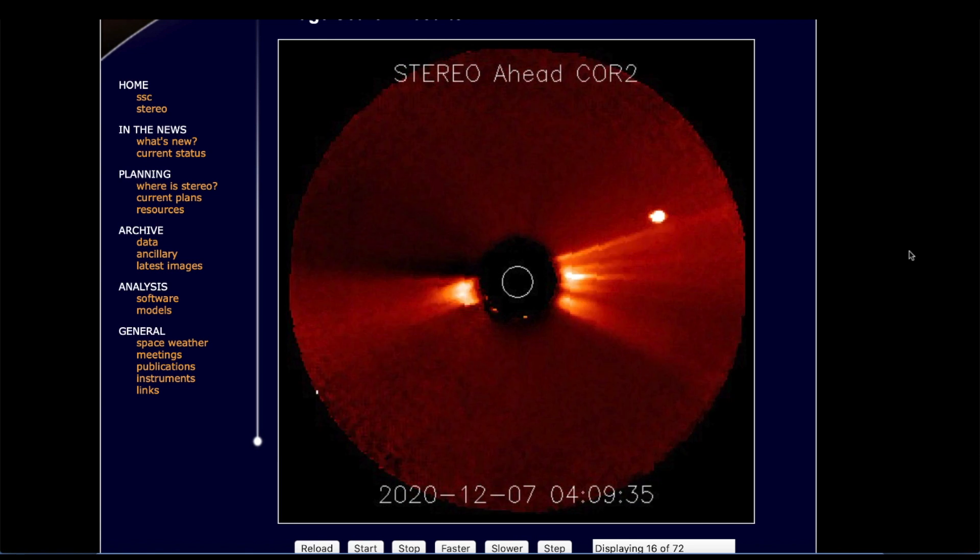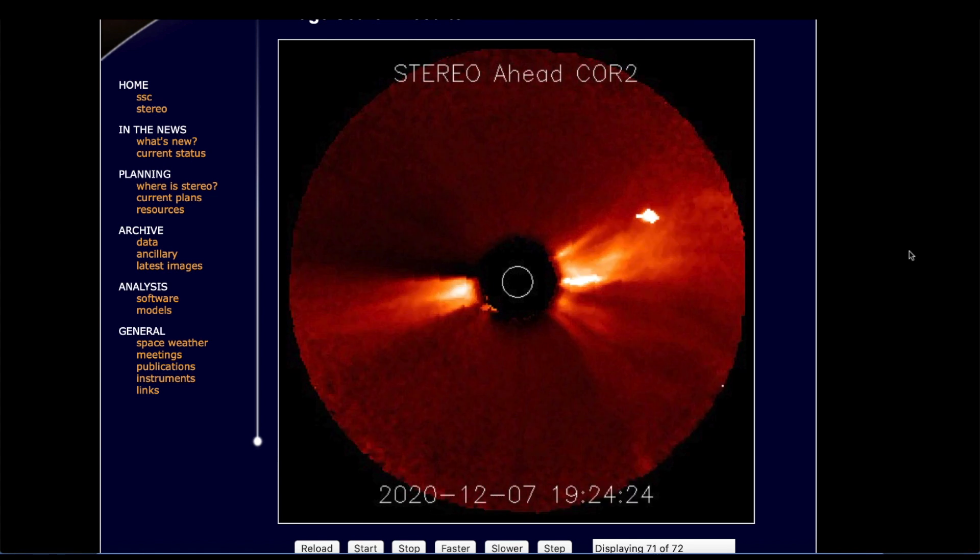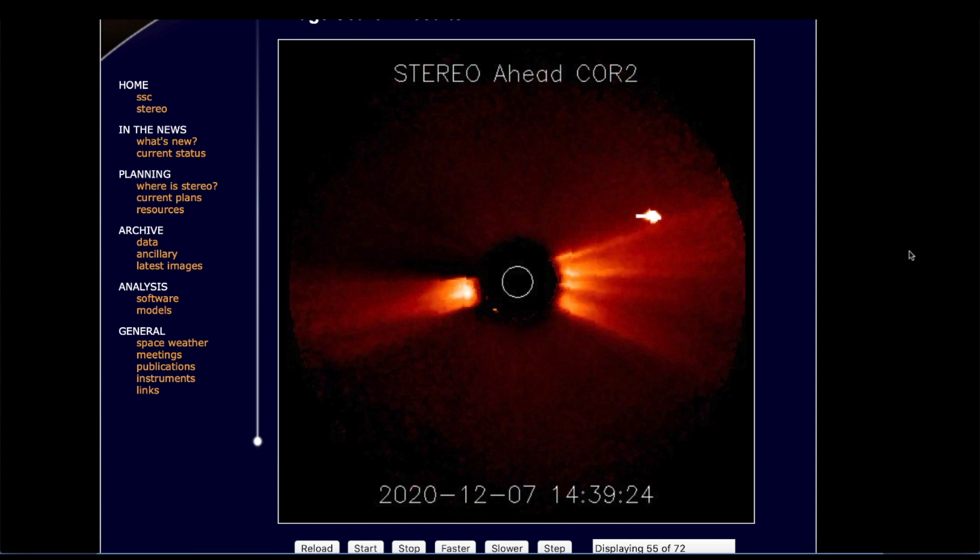Hey, what's up guys? Hope everybody's doing well and having a great day. We're here at the STEREO Ahead spacecraft viewing the Sun from the far left-hand side of Earth, and you just saw a long duration, very strong C-class solar flare that is headed towards Earth.